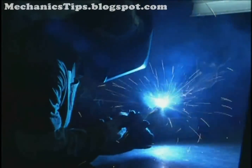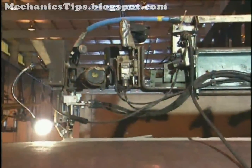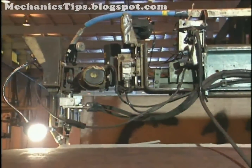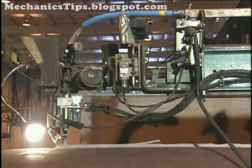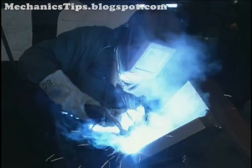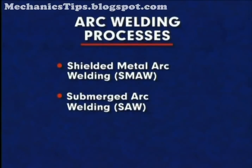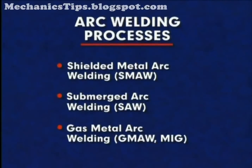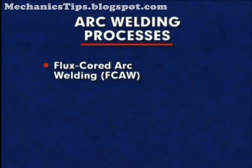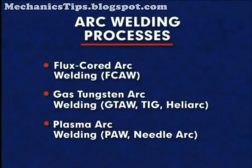While welding, the electrode is moved either manually or mechanically along the joint, or the electrode is held stationary and the work piece is moved. Arc welding encompasses a variety of processes, the primary types being shielded metal arc welding, submerged arc welding, gas metal arc welding, flux core arc welding, gas tungsten arc welding, and plasma arc welding.